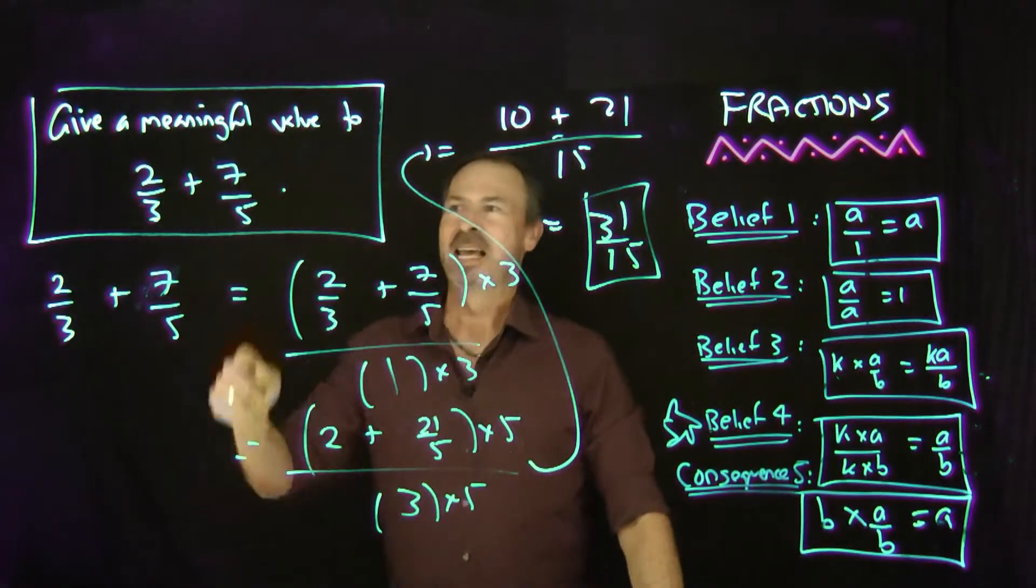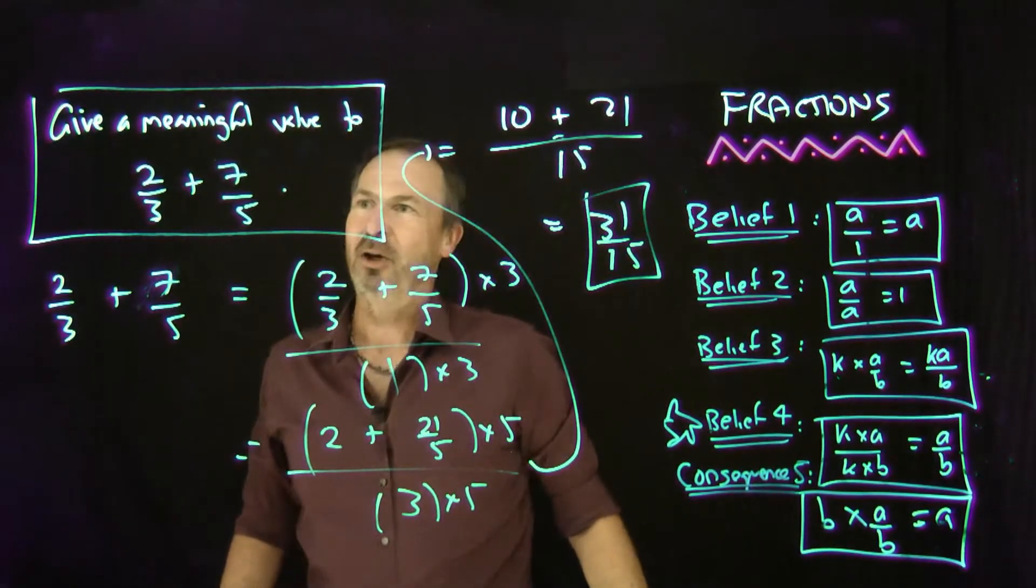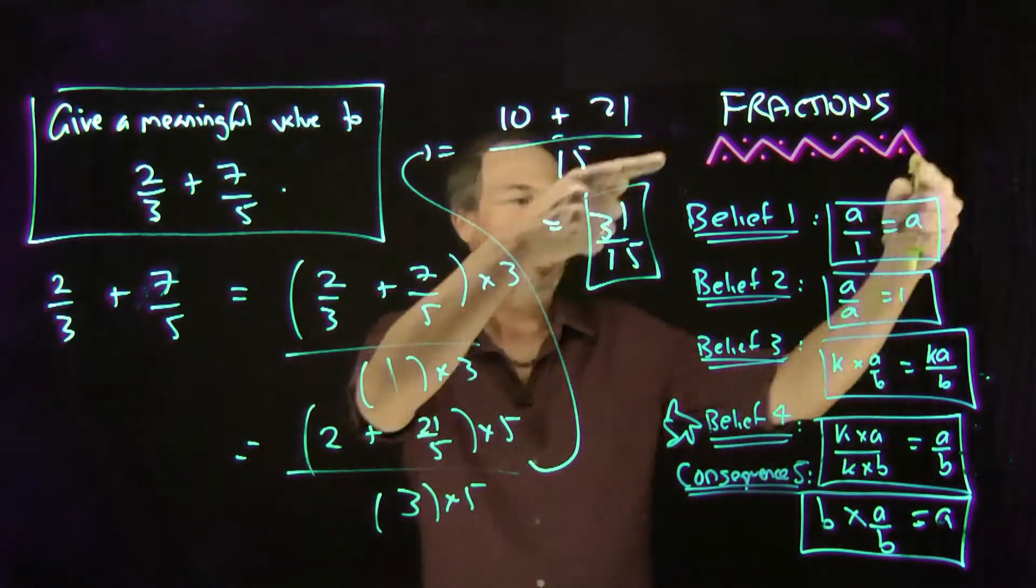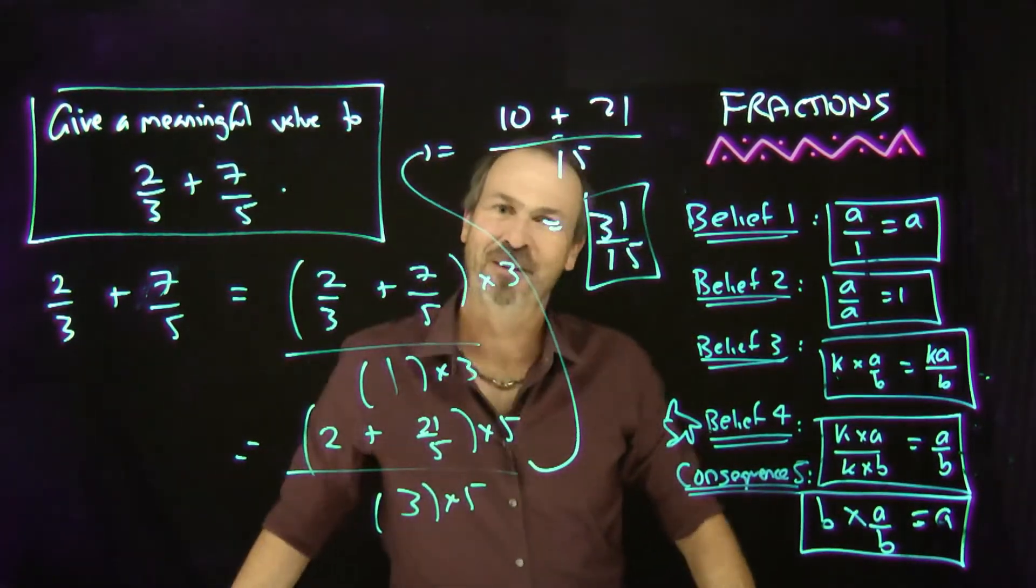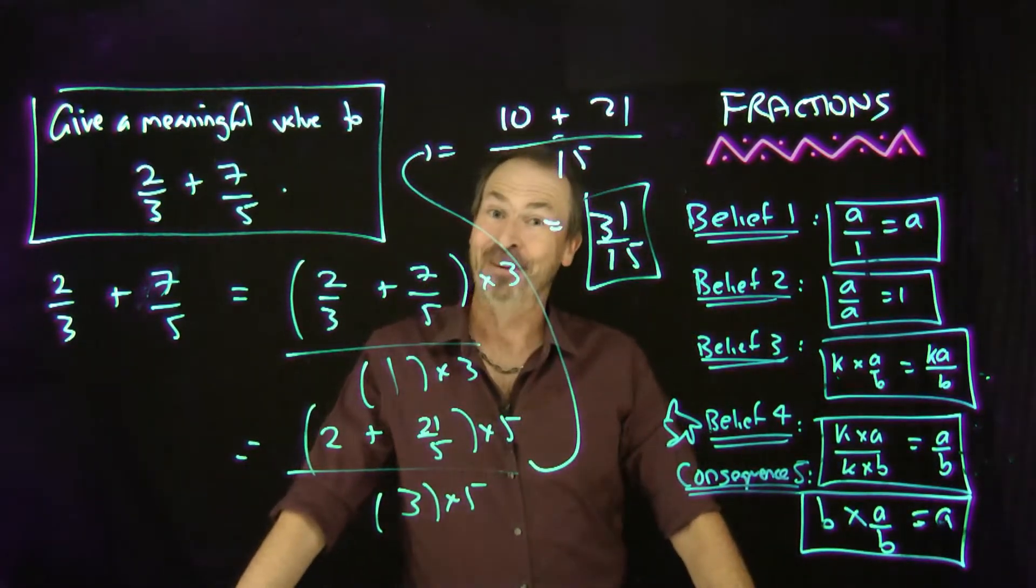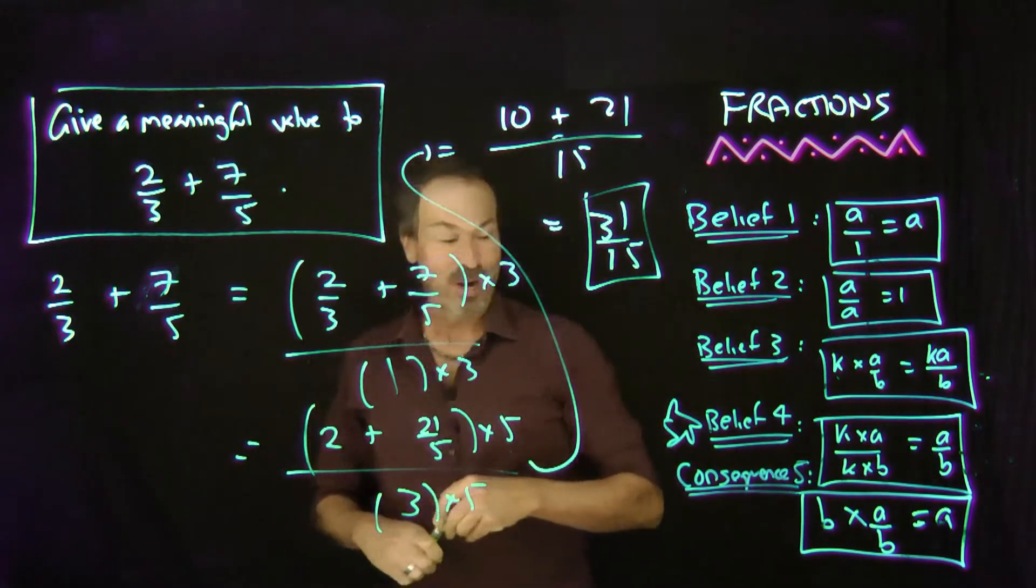31/15. Here's a meaningful value to this particular quantity. 2/3 plus 7/5. Based on what I believe about fractions. It's equivalent to 31/15. Wow. Did it. Did it. That's wonderful.